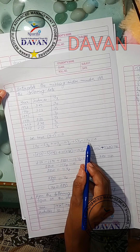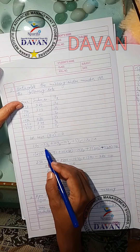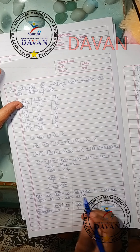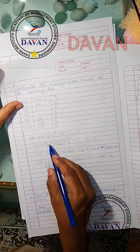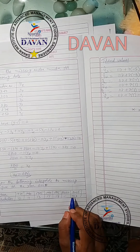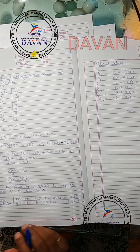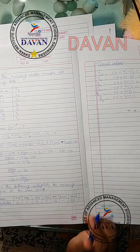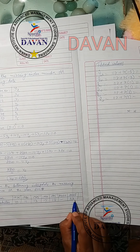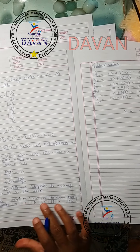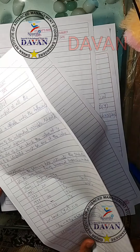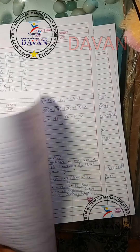Similarly, with 5 unknowns, we use (y minus 1) to the power of 5 equals 0, giving the equation: 1·y5 minus 5·y4 plus 10·y3 minus 10·y2 plus 5·y1 minus 1·y0 equals 0. Substitute the values according to the corresponding y values to get the unknown value y2.